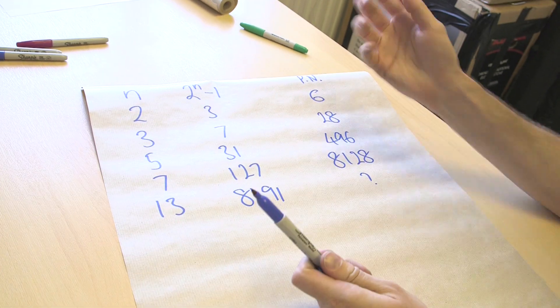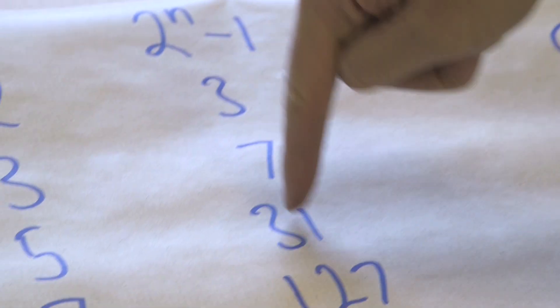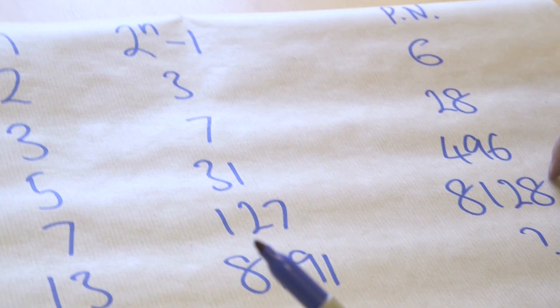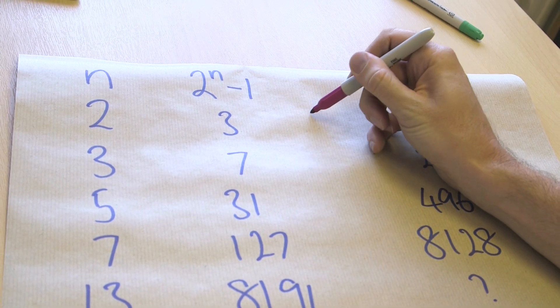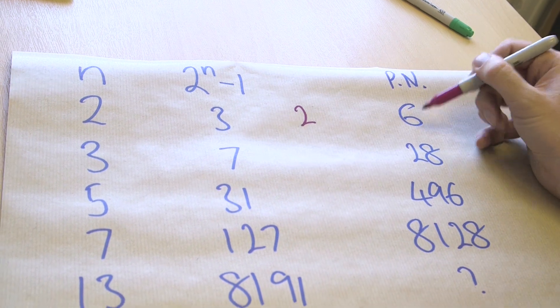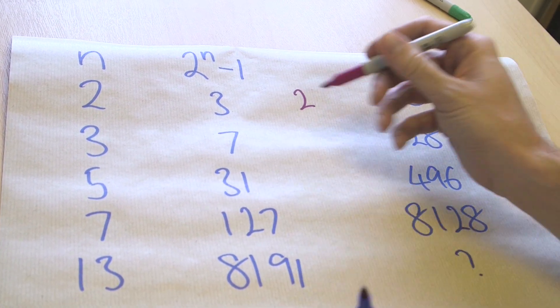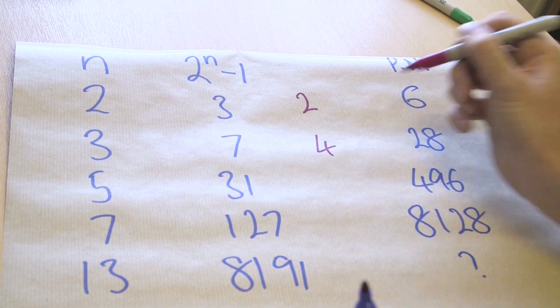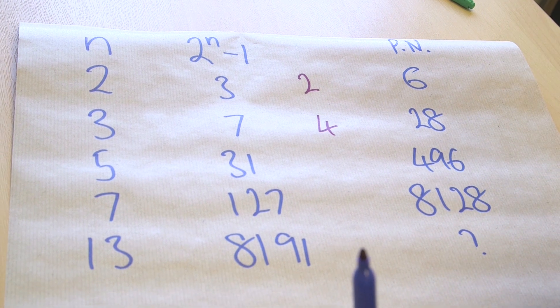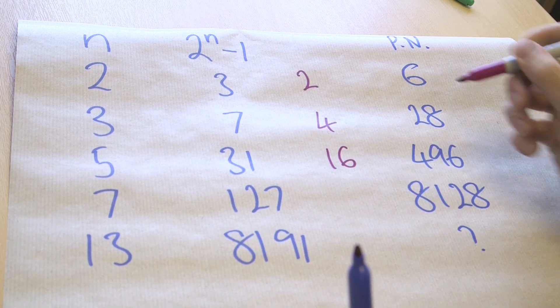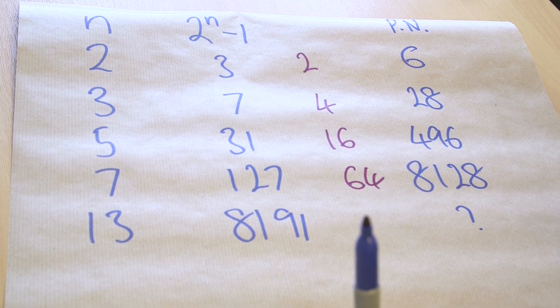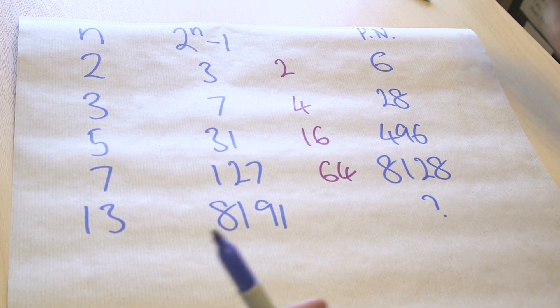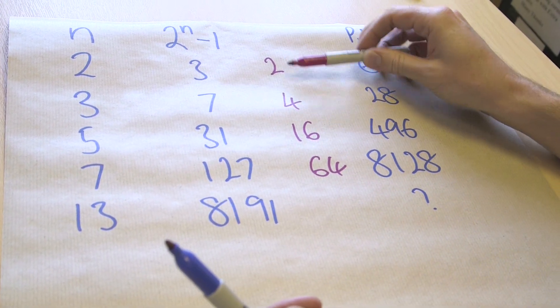So if you look at the link, I showed you that these were all factors of these perfect numbers. In fact, I'm going to write those in. So if you have 3, you multiply it by 2, you get 6. If you get 7 and you multiply it by 4, you get 28. If you get 31, you multiply it by 16, you get 496. 127, multiply it by 64, you get 8,128. And so now you should be thinking, what's the pattern here?